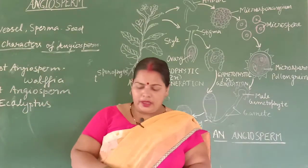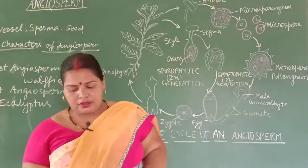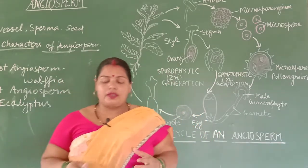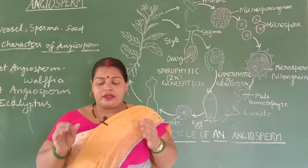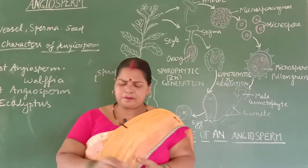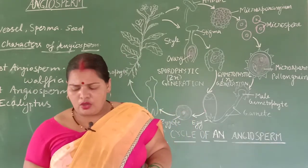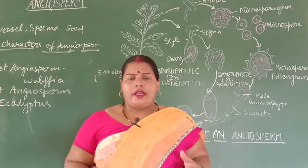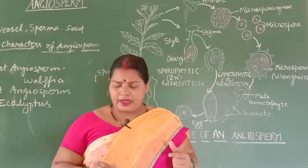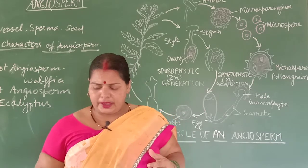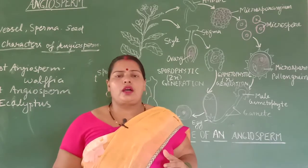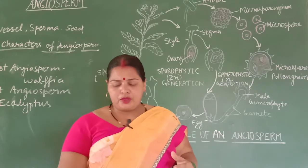In the angiosperm, the flowering plants have ovules covered by the ovary. The two reproductive parts of the angiosperm are fruits and flowers.